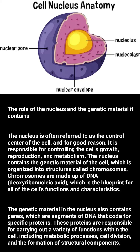The nucleus contains the genetic material of the cell, which is organized into structures called chromosomes. Chromosomes are made up of DNA, deoxyribonucleic acid, which is the blueprint for all of the cell's functions and characteristics.